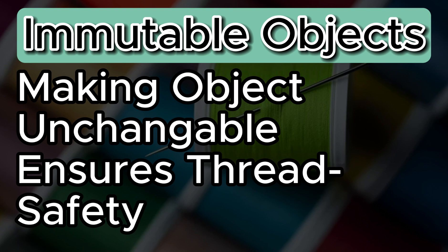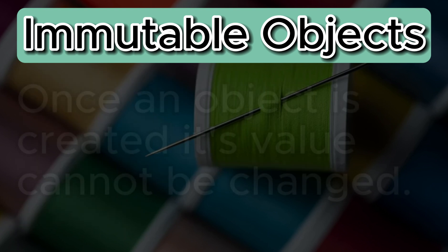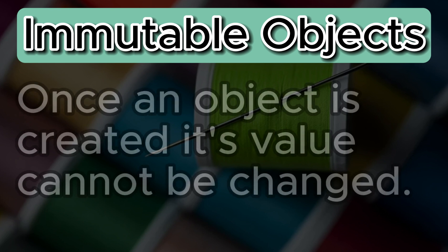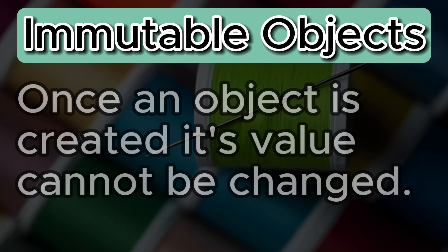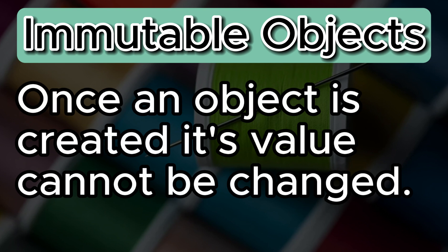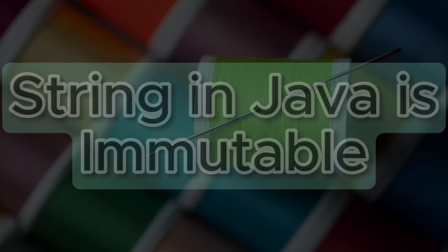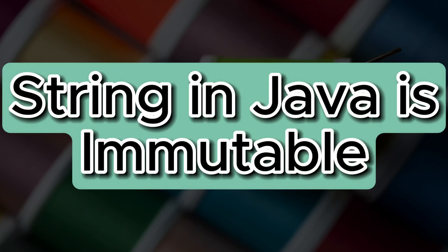What exactly are immutable objects and why do we need them? Immutable objects are objects whose state cannot be modified after they are created. Once an immutable object is instantiated, its internal state including its fields cannot be changed. Any operation that appears to modify the object will actually result in a new object — the existing object will not be changed. The most common example of an immutable object in Java is String: when we assign a new string literal, it creates a new literal in the string pool and returns its reference.